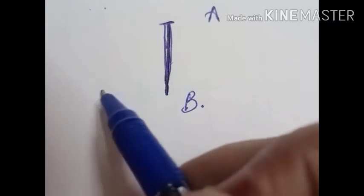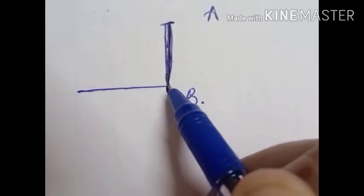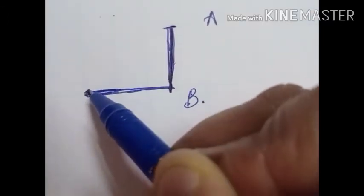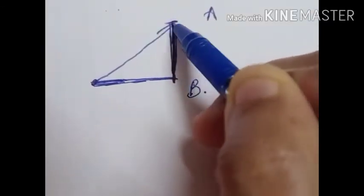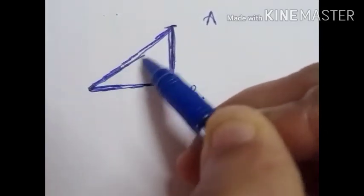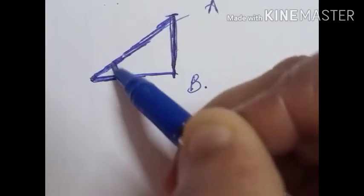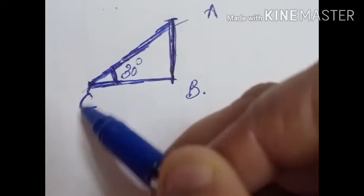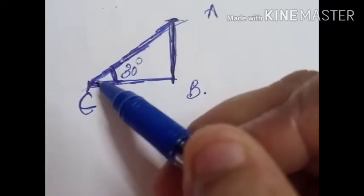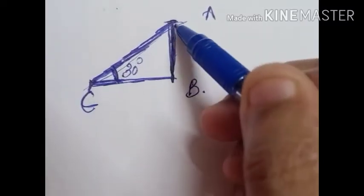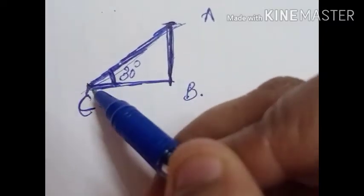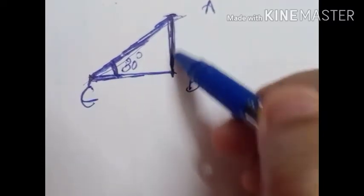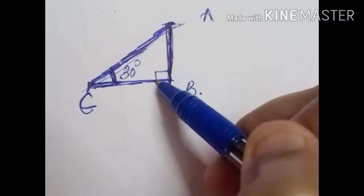According to the question, from the point on the ground, this is the ground level. The angle of elevation of the top from this point on the ground is given as 30 degree. This is the point on the ground; this is the top of the tower. The angle of elevation of the top of the tower from the point on the ground is 30 degree. This vertical tower and the ground level form 90 degree.